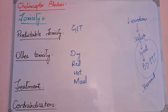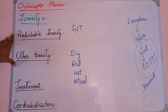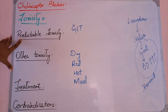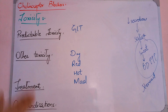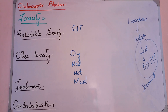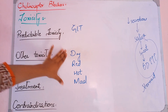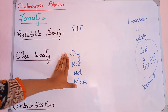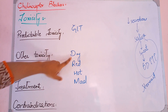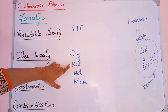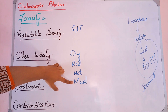The clinical features will become more pronounced. We divide toxicity into two types: predictable toxicity and other toxicities. Predictable toxicity means we know the clinical features will increase. Other toxicities are ones we don't directly understand why they happen, but they are also known. These are described by four mnemonics: Dry as a bone, Red as a beet, Hot as a pistol, and Mad as a hatter.